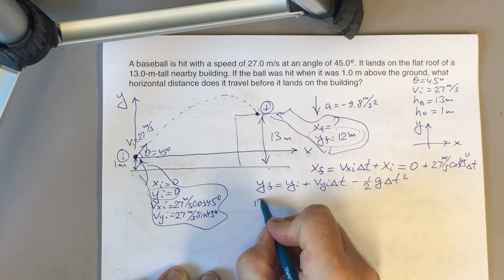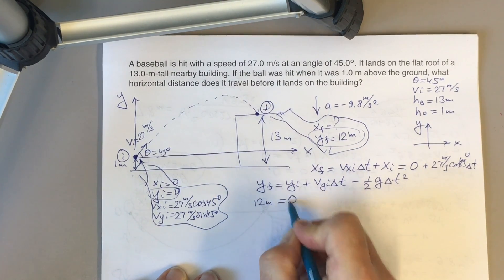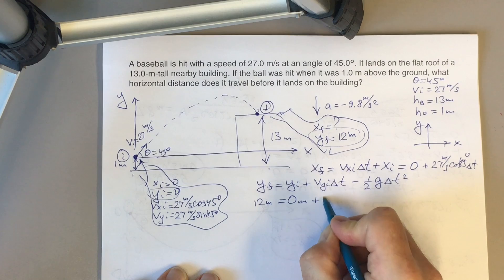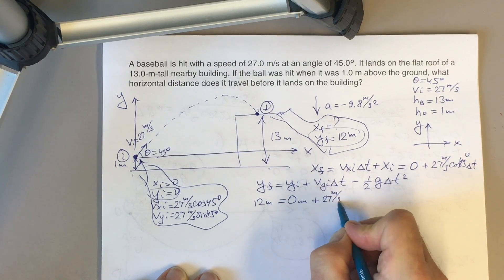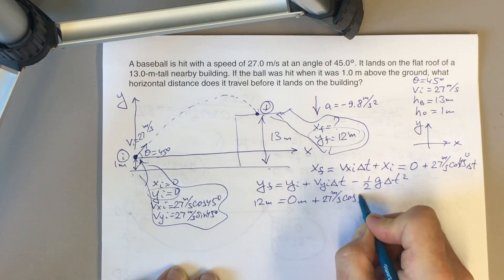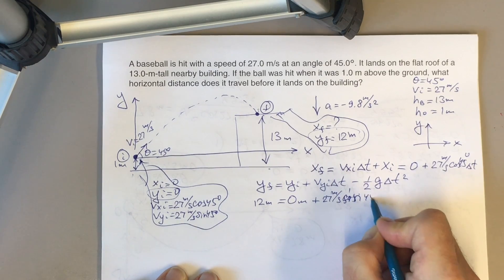you will have 12 meters equals 0 meters plus 27 meters per second times sine 45 degrees times delta t minus one-half times 9.8 meters per second squared times delta t squared.